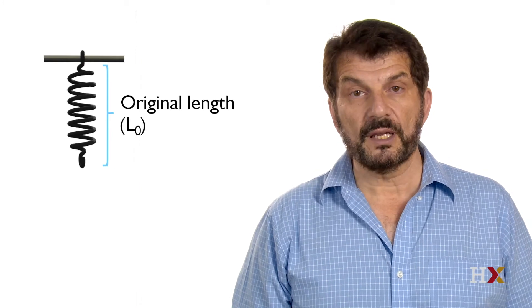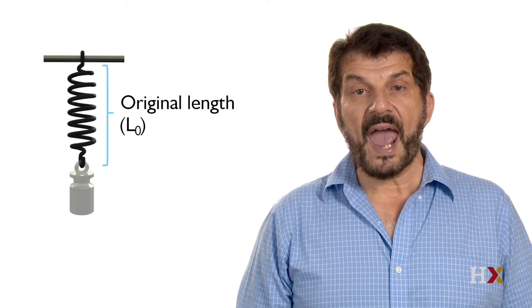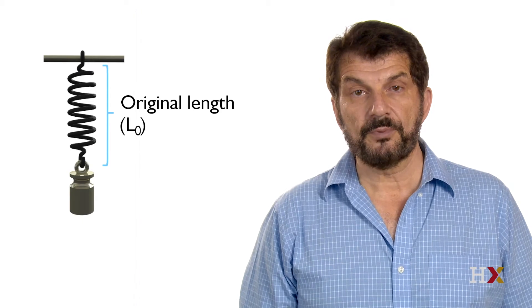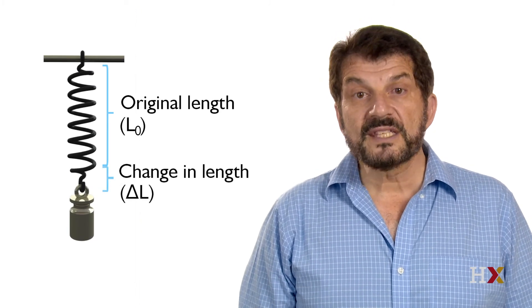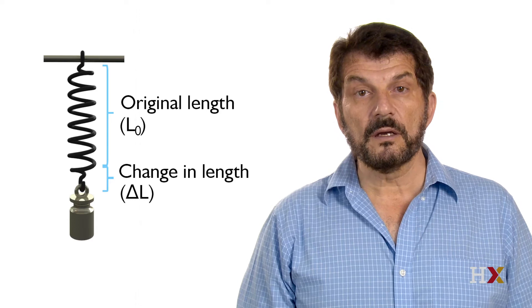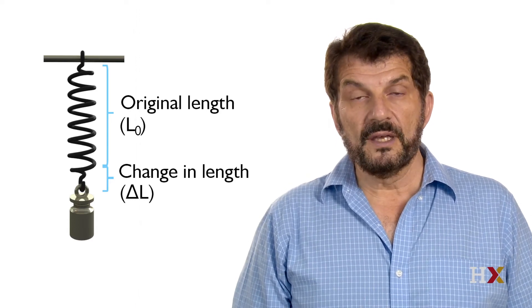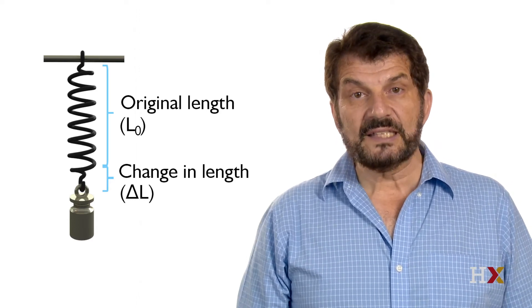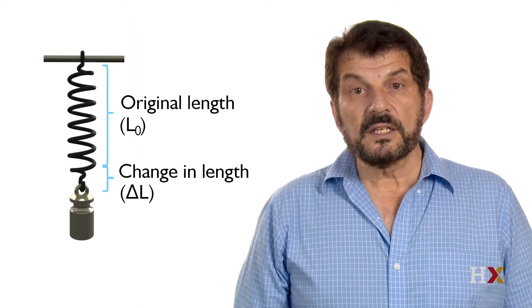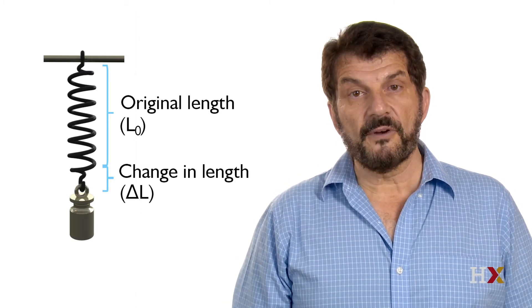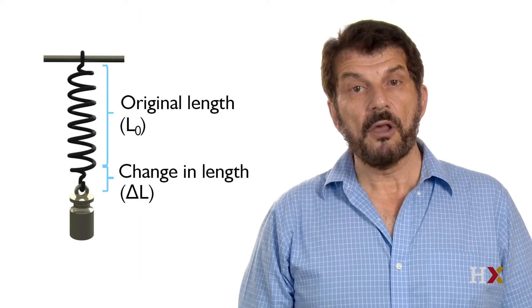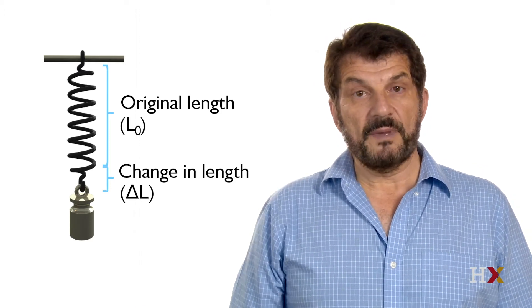And this is how we characterize what the mouthfeel of a food is. So if we want to measure it, we have to measure the elasticity. Let's start with the very simplest thing — let's start with a spring. Here I have a spring, and I can hang a weight on the end of the spring. If I hang a weight on the end of the spring, the spring lengthens — it becomes longer by a certain amount. That delta L, the change in length, is determined by how stiff, by how elastic the spring is, and how large the weight is.